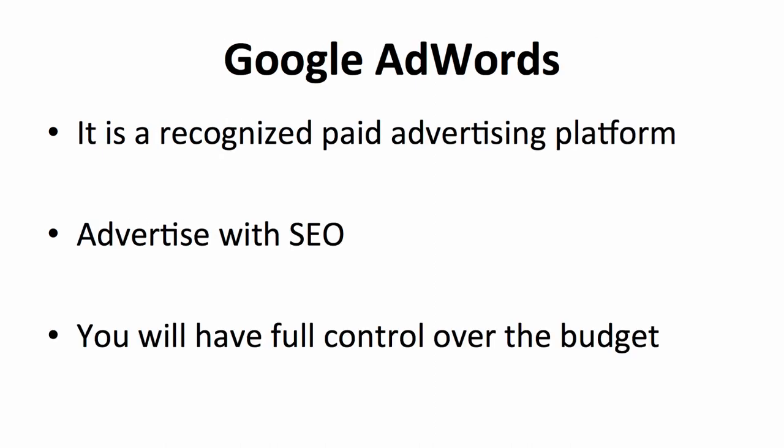Unlike the organic traffic you get from simply putting your video up, Google AdWords is a recognized paid advertising platform. With a huge number of users, Google is indeed the most prominent platform in the world — holding 86% of the search engine market. More than three-quarters of people use Google's search engine daily. Chances are that advertising with Google AdWords can double or even triple the traffic to your website. Google AdWords advertises with SEO, and you'll need to understand the keywords in your niche to get good results, which will be covered in another video.